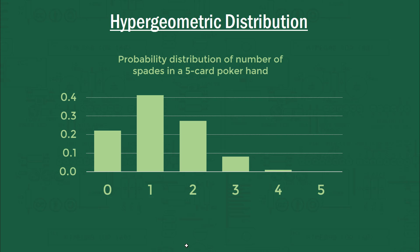So out of five cards you can either have zero spades, one, two, three, four, or five spades. And that collectively is a hypergeometric distribution. But let's find out why.